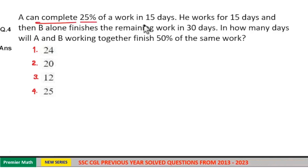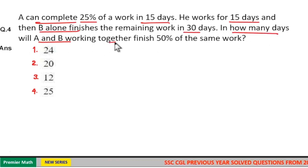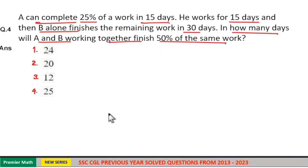A can complete 25% of work in 15 days. If he works for 15 days and B alone finishes the remaining work in 30 days, in how many days will A and B working together finish 50% of the same work?